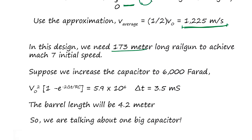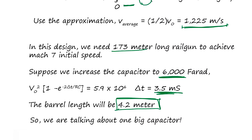With 2000-farad capacitor, we'd need a 173-meter-long rail — far too long. Increasing to 6000 farads, delta-t becomes 3.5 milliseconds and barrel length comes down to 4.2 meters, which is reasonable. So the capacitor size is the critical parameter.